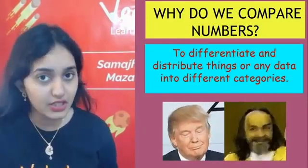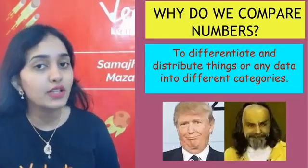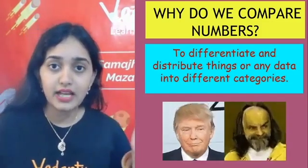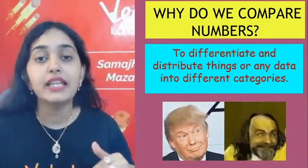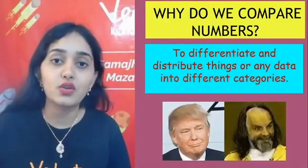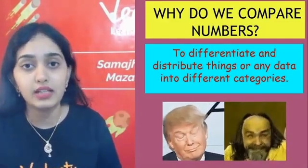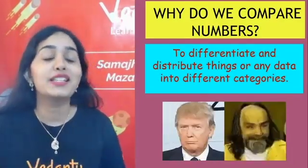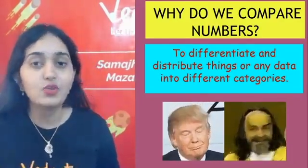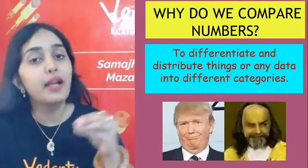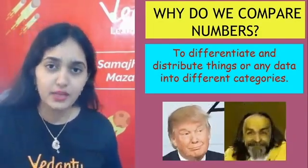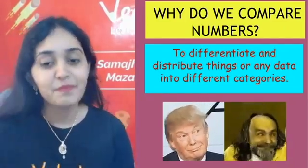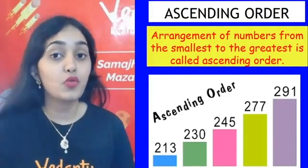The second thing we learned was: why do we compare numbers? We compare numbers to differentiate and to distribute things or data into different categories. For example, if Rita scored 40 and Prajusha scored 30, we compare to find who scored more. Since 40 is greater than 30, Rita scored more. This is how we compare numbers — to tell or to differentiate things.